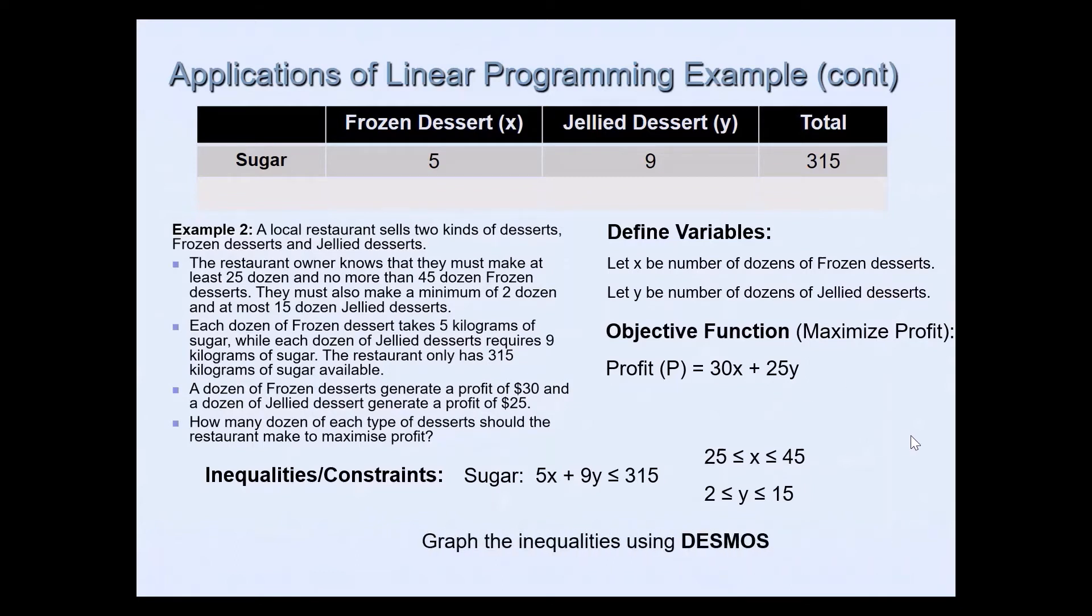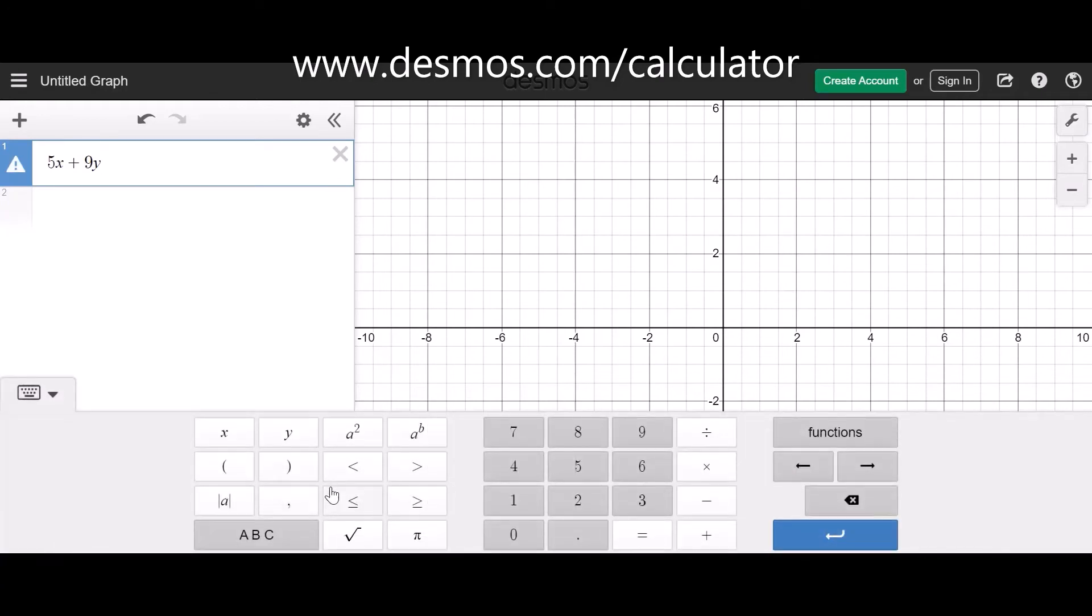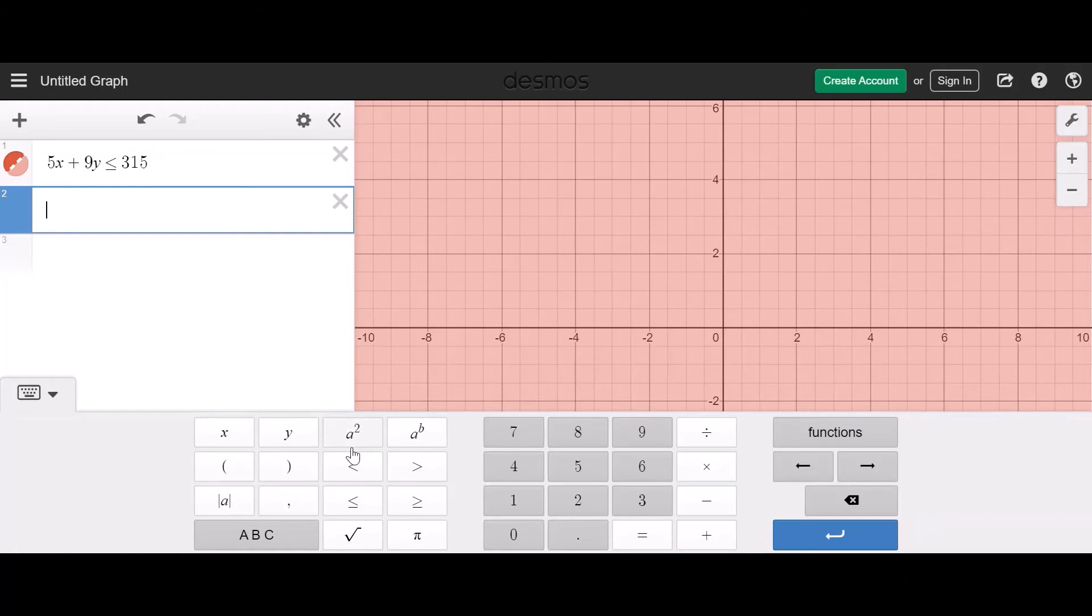And then we will need to graph this of course on Desmos and I'll quickly show you how to do that, it's pretty straightforward. So once you go on desmos.com you'll find the online graphing calculator. So I'll enter the functions here. So we had 5x + 9y and then is less than equal to 315 kilograms available. And then we have x in between 25 and 45, so 25 ≤ x ≤ 45. And then we had y between 2 and 15, so 2 ≤ y ≤ 15.